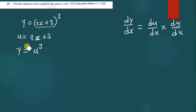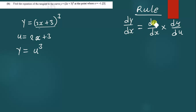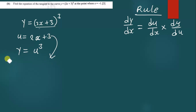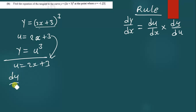Using the chain rule, dy/dx is equal to du/dx times dy/du. Let us find what du/dx is and dy/du is. Finding du/dx, we have u equal to 2x plus 3, therefore du/dx gives us just 2.